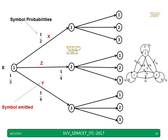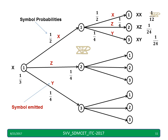Now moving to the second stage of the tree. From state 1 again we branch to 1, 2, and 3 emitting x, z, y with probabilities 1 by 2, 1 by 4, 1 by 4 respectively. To calculate the probability of sequence xx: from state 1, the branch 1→1 emits x with probability 1 by 2, and then 1→1 again emits x with probability 1 by 2.